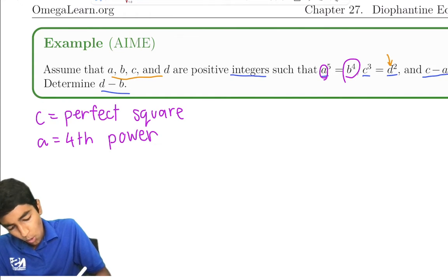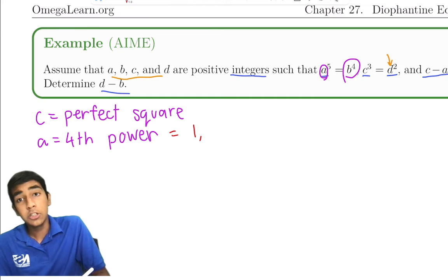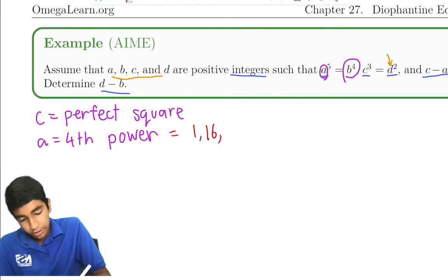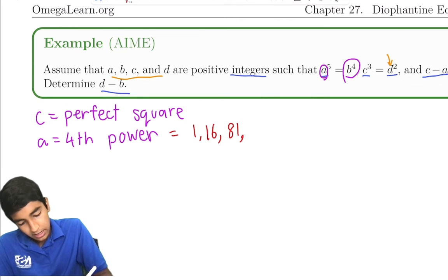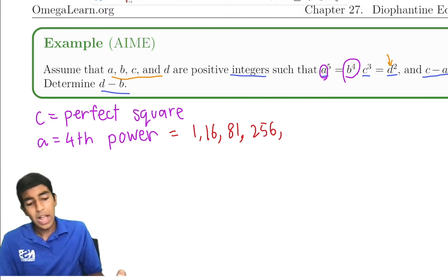Well, a could be 1⁴, 2⁴ which is 16, 3⁴ which is 81, 4⁴ which is 256, and that's it. Do any of these work?